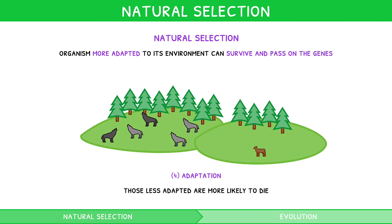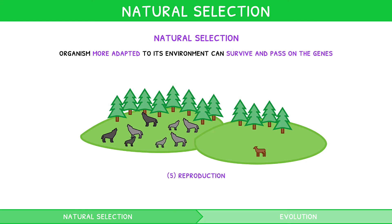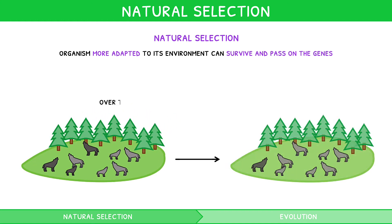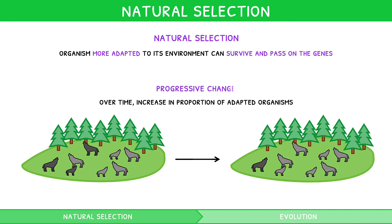The organisms that survive can then reproduce and create offspring. The genes for their adaptation can then be inherited by these offspring. Therefore, over time, there is an increase in the proportion of adapted organisms. This observation is known as progressive change.